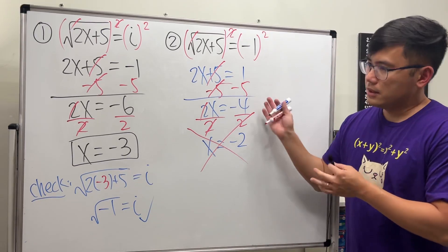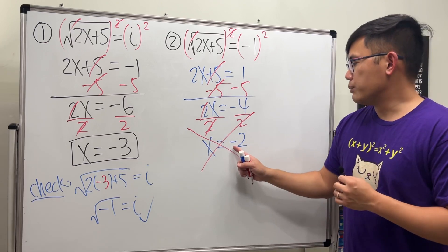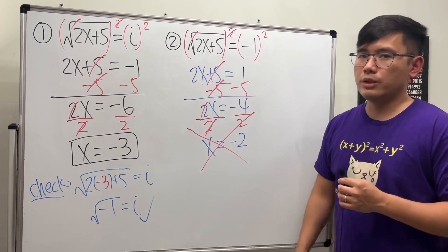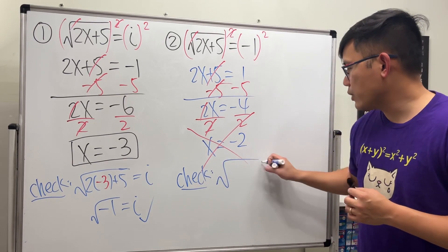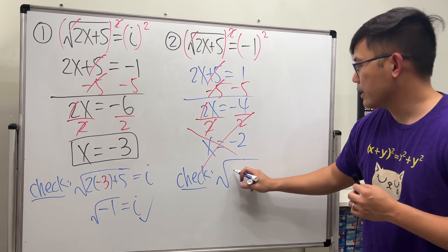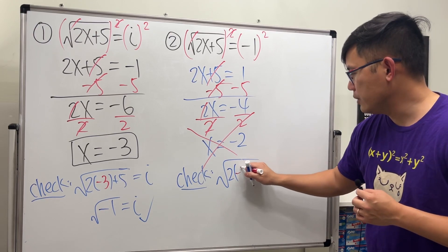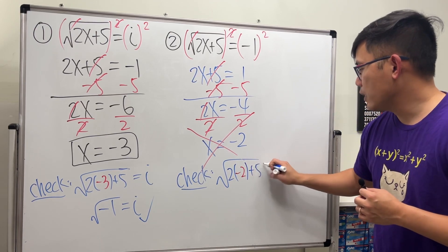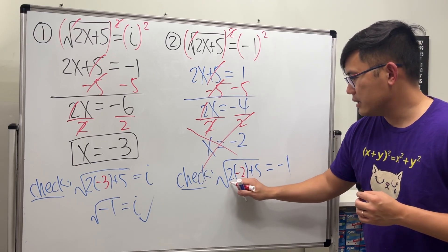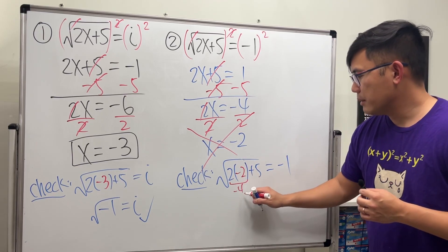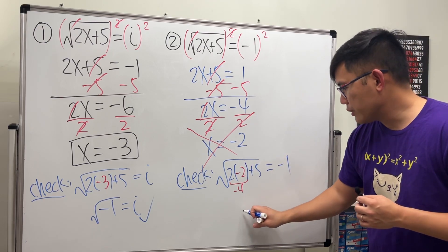But if you take a look at this one, what if we plug in negative 2 into the original equation? In that case, let's go ahead. We see that the square root of 2 times negative 2 and then plus 5. Will that give us negative 1? Well, this right here is negative 4 plus 5, which is positive 1.